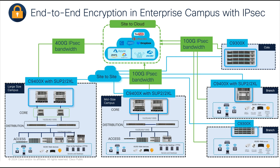In a typical campus architecture, whether large or small, we normally structure it with access, distribution, and core layers. Often overlooked yet crucial is the ingress layer, interfacing the campus with external networks like the internet and WAN. This layer plays a vital role in establishing secure connections to entities like other campuses, data centers, or cloud hosting services.